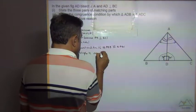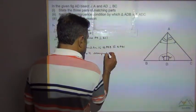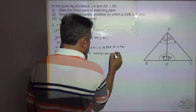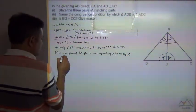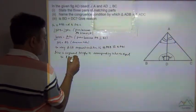In congruent triangles, the corresponding sides are equal. So BD is equal to DC.